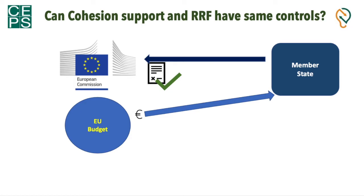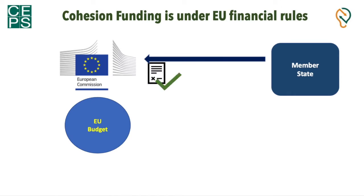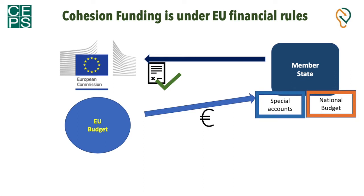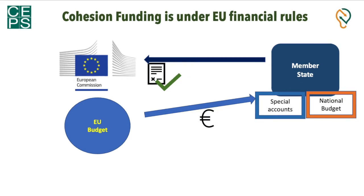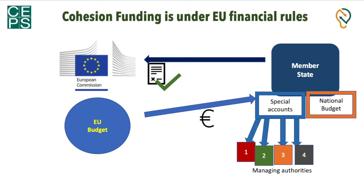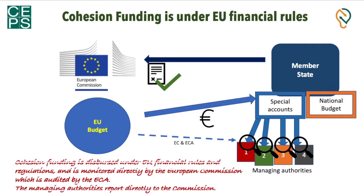In cohesion policy and the recovery and resilience facility are very different. For the cohesion policy, once the program is approved, the funding from the EU budget goes to special accounts — it doesn't go to the national budget, it's separated from the national budget. The separate financial pipelines for EU funding go down to the managing authorities and agencies financing projects. These authorities operate on behalf of the EU using EU financial rules and are therefore directly monitored by the Commission, with work audited by the European Court of Auditors. EU funds are not mixed with the national budget. In a nutshell, cohesion funding is dispersed under EU financial rules and monitored directly by the European Commission, audited by the European Court of Auditors, and managing authorities report directly to the Commission.